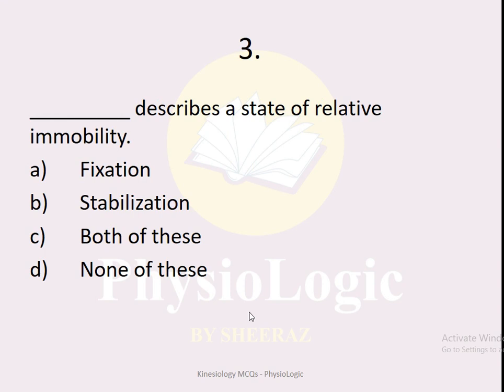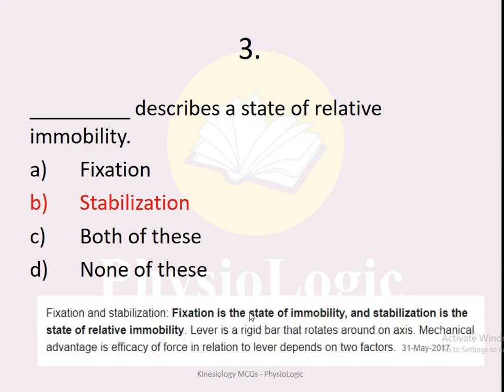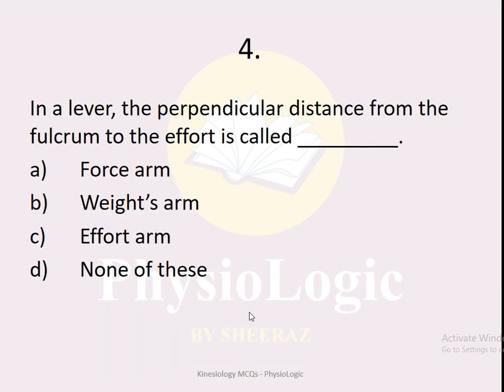MCQ number three: which of the following describes a state of relative immobility — fixation, stabilization, both, or none? The correct option is stabilization. Both fixation and stabilization are used for immobilizing structures. Fixation is a state of absolute immobility, whereas stabilization is a state of relative immobility. So if the MCQ asks for perfect absolute immobility, the answer is fixation; for relative immobility, it is stabilization.